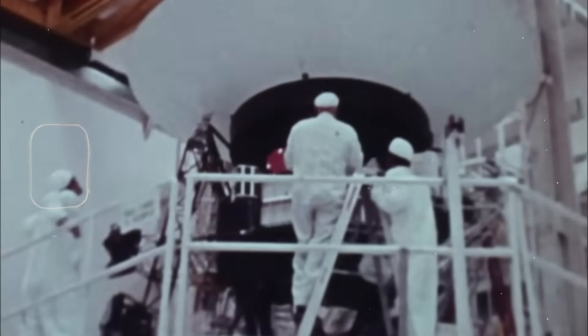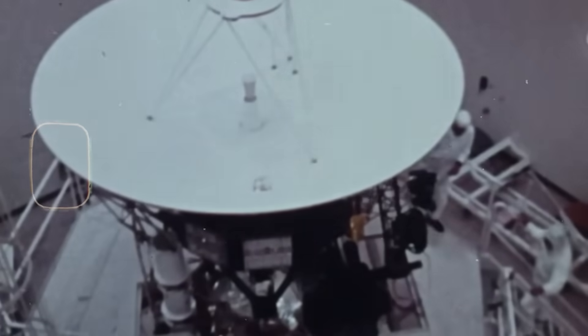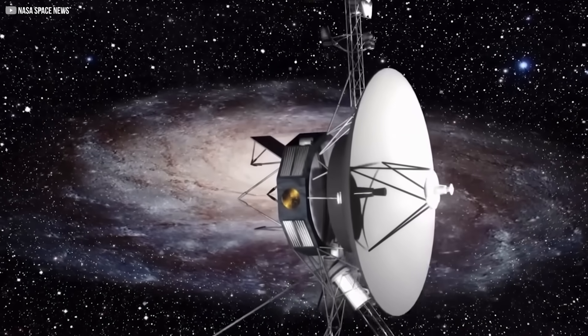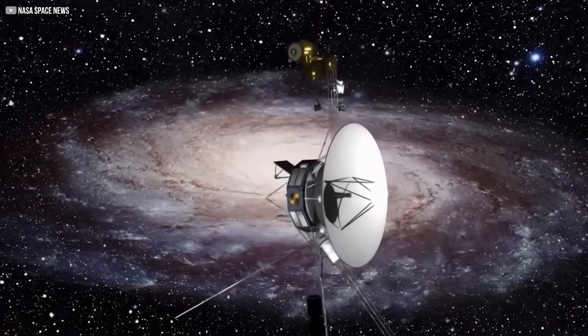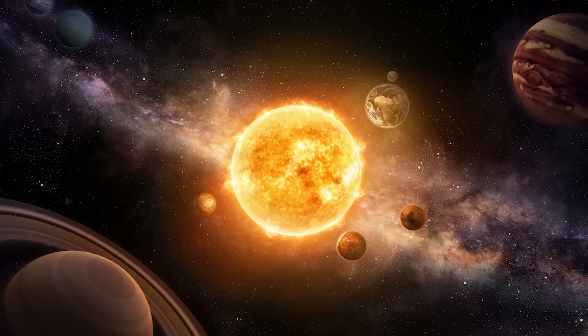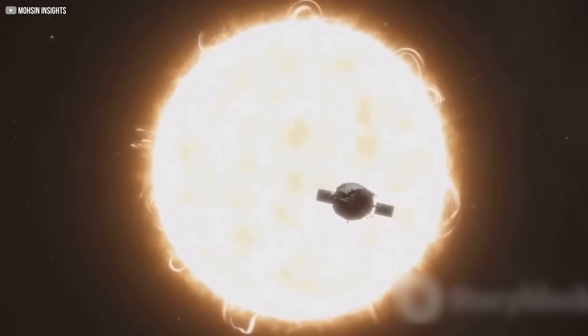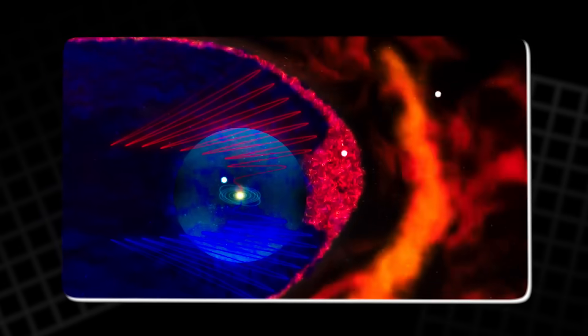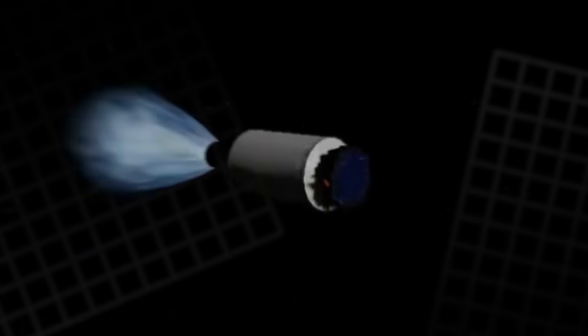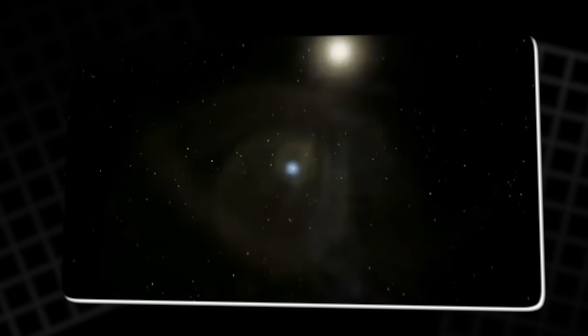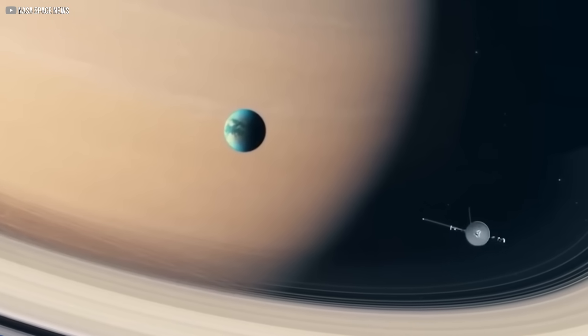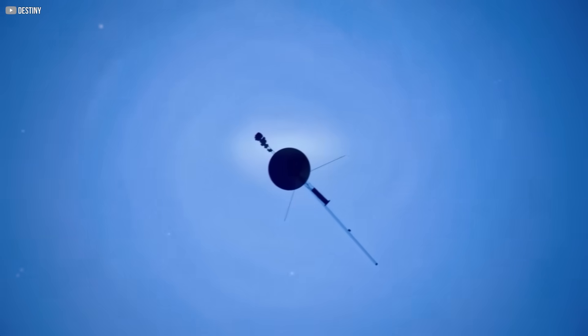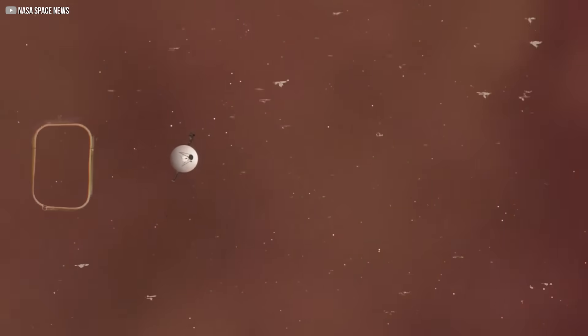The Voyager missions have provided us with groundbreaking insights into the true nature of our solar system's edge. What once seemed like a static boundary is revealed to be a dynamic, shifting region that challenges our understanding of space. From temperature spikes to magnetic field alignments, the data collected has transformed how we view the Sun's influence and its interactions with the interstellar medium. As new missions like IMAP push the limits of exploration, the Voyager's legacy will continue to shape our understanding of the vast, mysterious space beyond our solar system. The journey into the unknown is far from over.